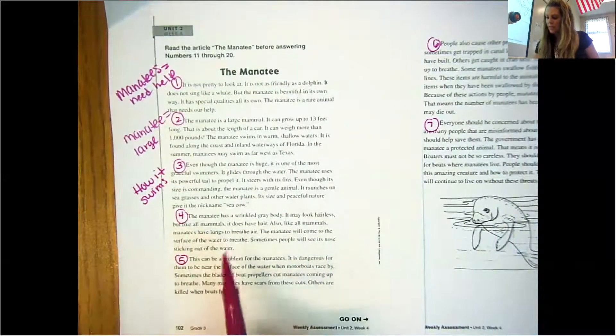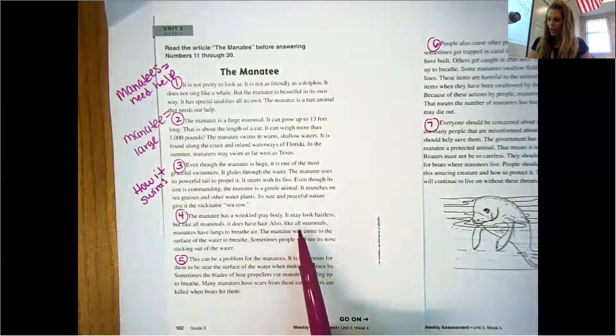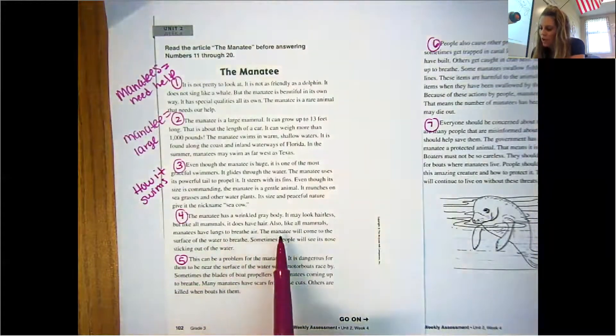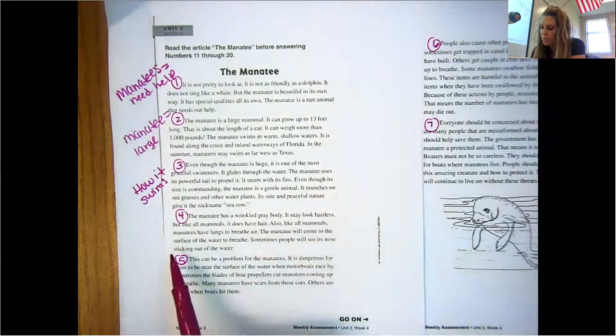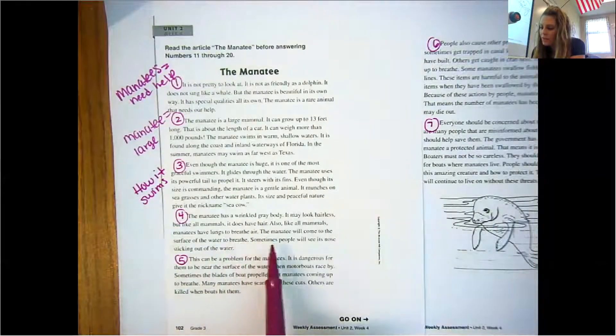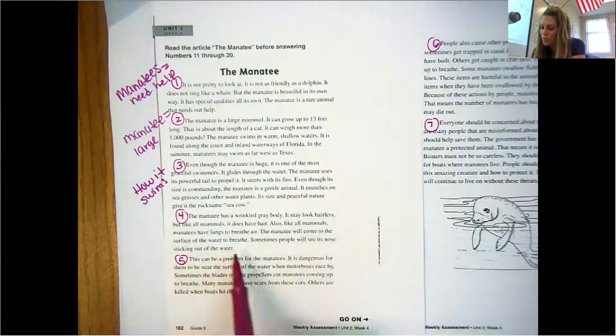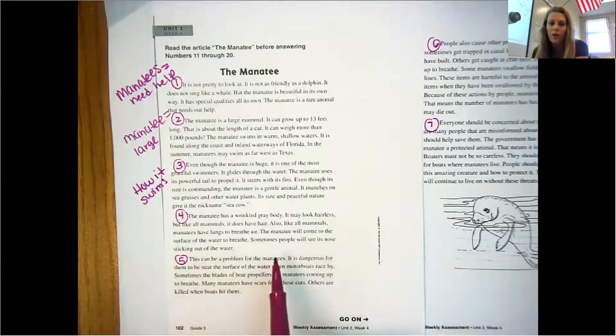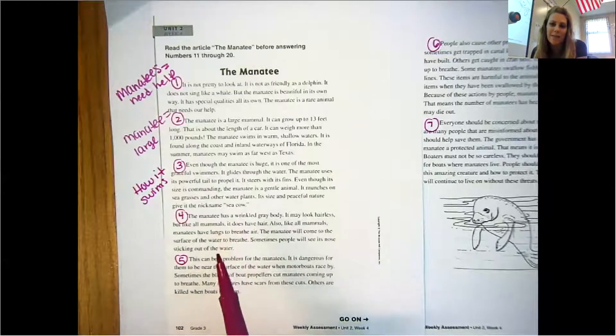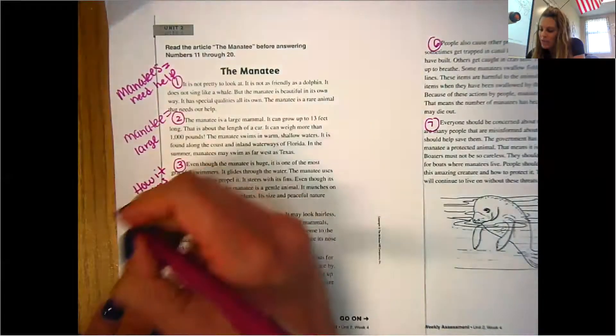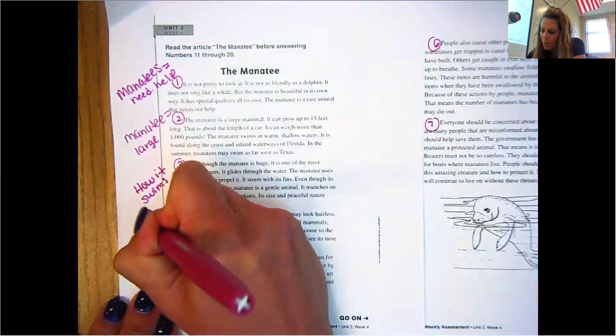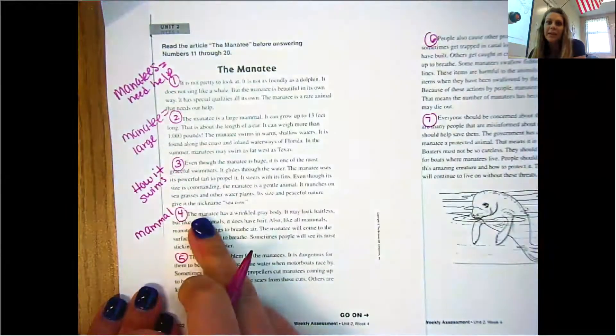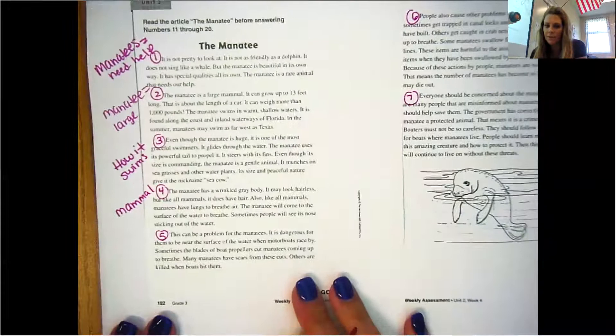Paragraph four. The manatee has a wrinkled gray body. It may look hairless, but like all mammals, it does have hair. Also like all mammals, manatees have lungs to breathe air. The manatee will come to the surface of the water to breathe. Sometimes people will see its nose sticking out of the water. So this was repeated a couple of times that it's a mammal. Okay, so I'm going to put mammal next to it. You could have done how it breathes. Any of those would have been fine.